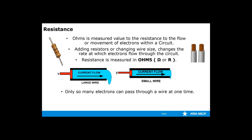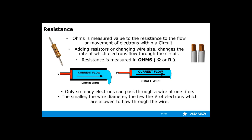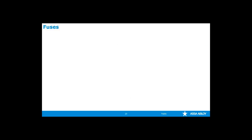Only so many electrons can pass through a wire at one time. The smaller the wire diameter, the fewer the number of electrons allowed to flow through the wire. If too many electrons are being forced through the circuit, the circuit will initially heat up and then something will have to give — either the product will fail, or hopefully there may be a fuse or a breaker within the circuit. So if the voltage and the current is too great, something is going to have to fail, and this is why fuses were developed.